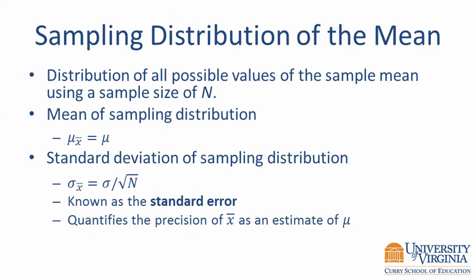This brief example with IQ scores only used three random samples, but it illustrates the basic idea behind a sampling distribution. A sampling distribution is the distribution of a statistic over all possible samples of size n from the population. It provides all of the possible values of a test statistic and the probability of observing each possible value. Although we obtain a sampling distribution by conceptualizing a process of repeatedly drawing random samples, we don't actually have to repeat the process. We can draw a single random sample to estimate the mean and compute the standard error of the mean by dividing the population standard deviation by the square root of the sample size.